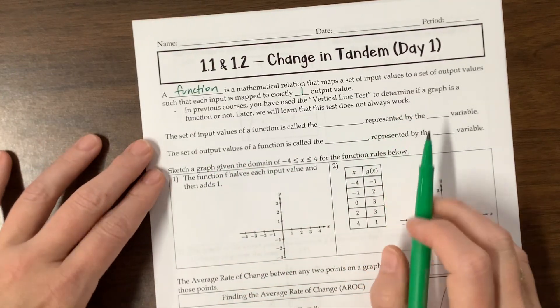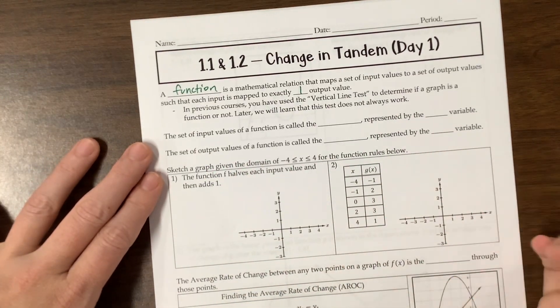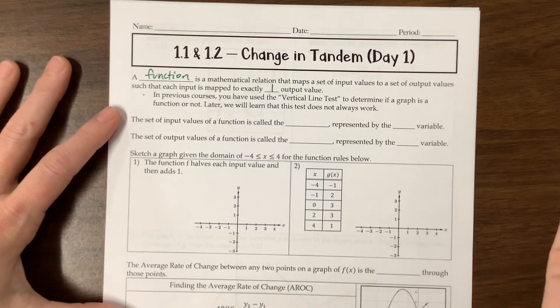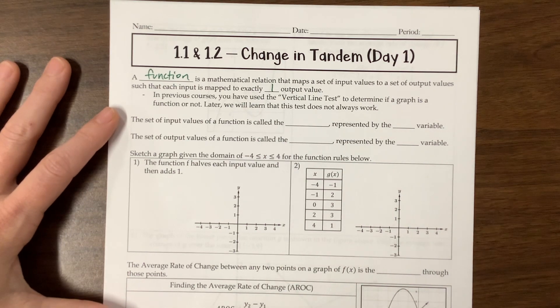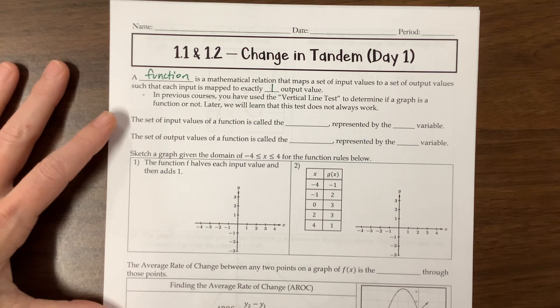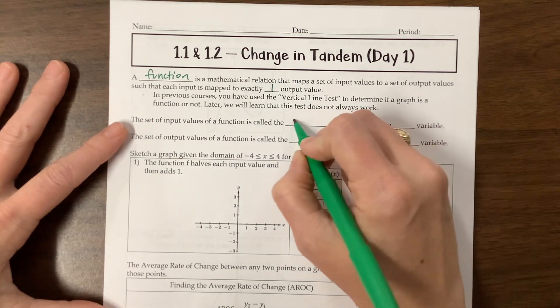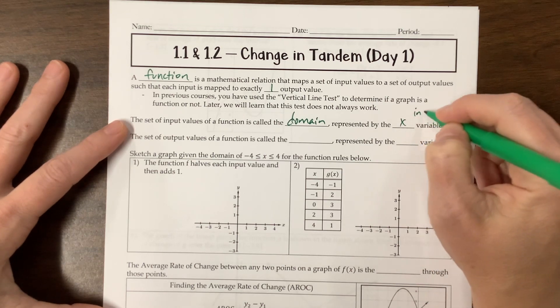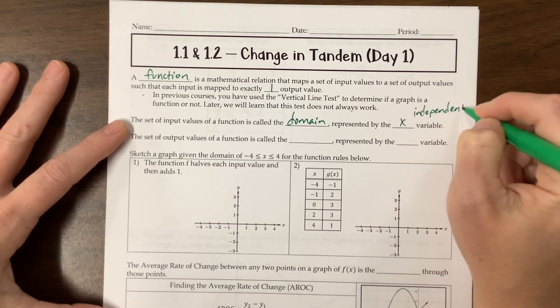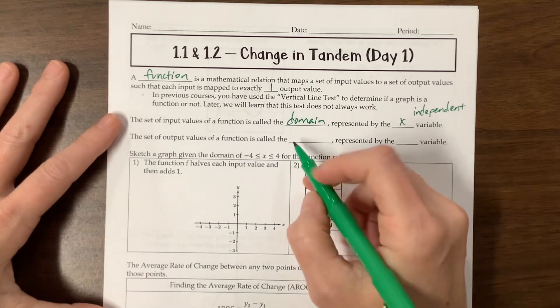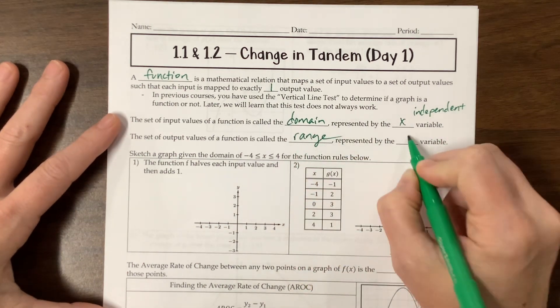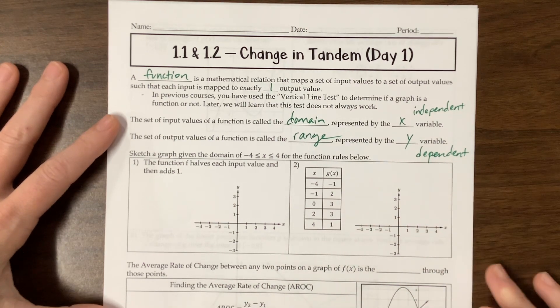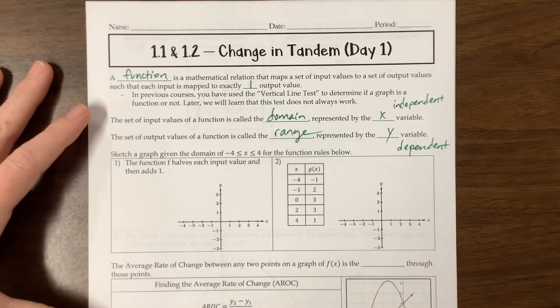It doesn't always work, but for the most part, and at this point in the year, we're pretty safe using that. The set of output values of a function is called the... Oh, excuse me. I read that wrong. The set of input values is called the domain, represented by the x variable, or we might talk about the independent. That's the independent variable. The set of output is the range, represented by the y or the dependent.